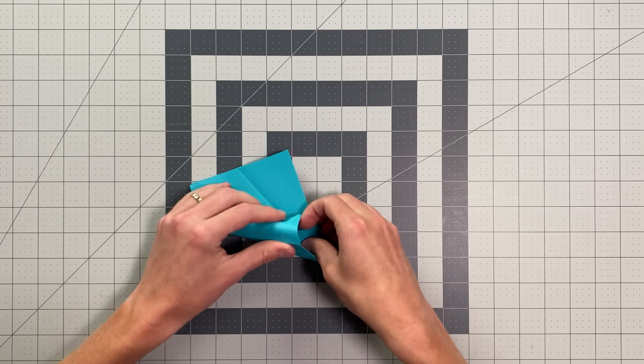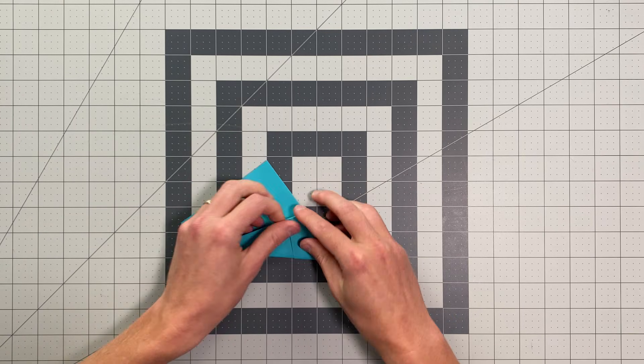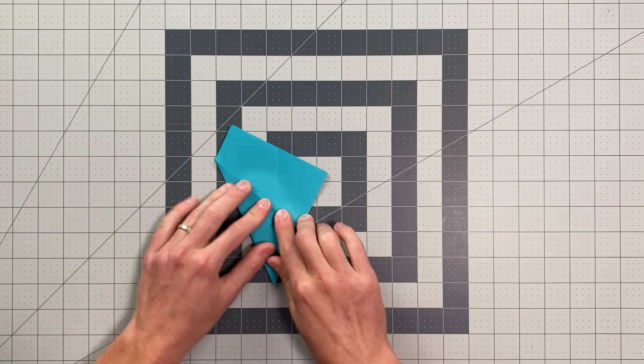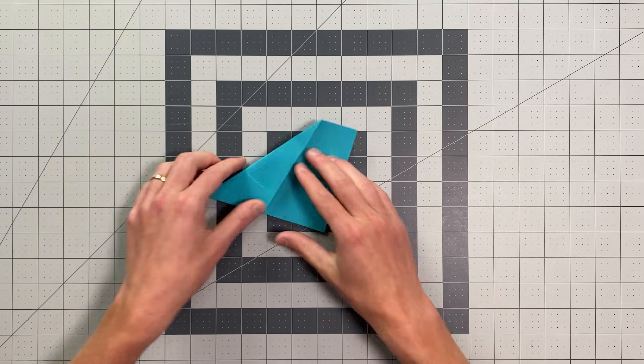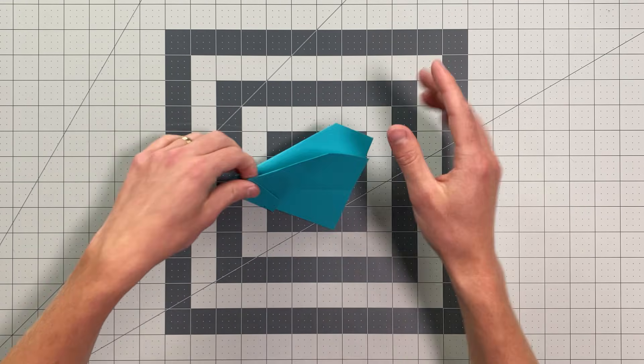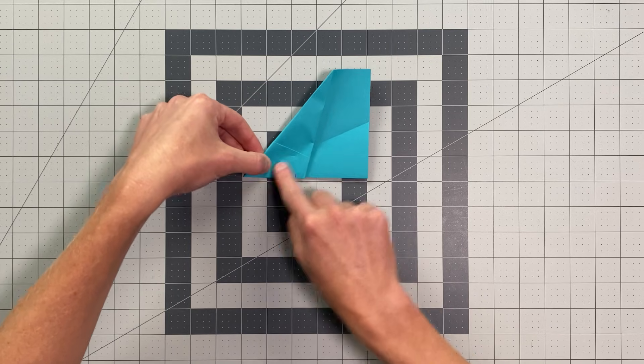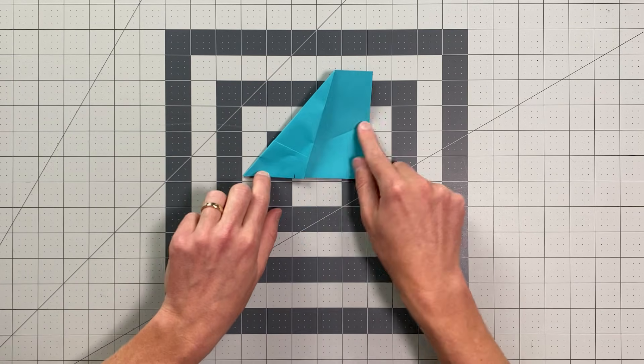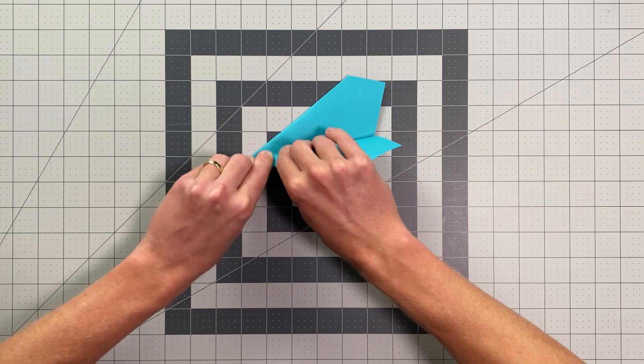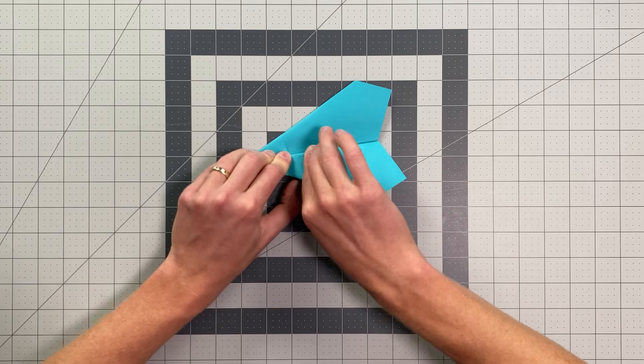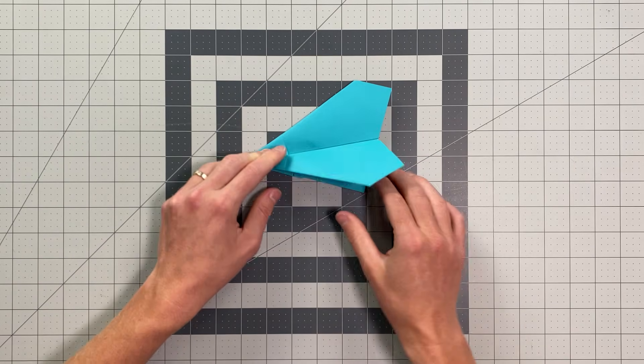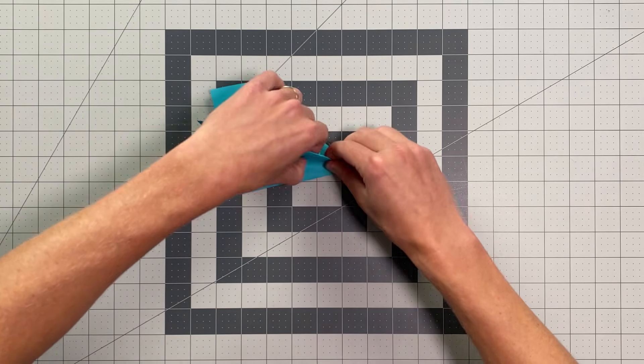Well, there we go. Press everything really nice and flat. And now we've already got our wing crease on that top layer, but we need to make that through here. So we're folding from the nose using the existing wing crease, just like that. And then do the same thing on this side.